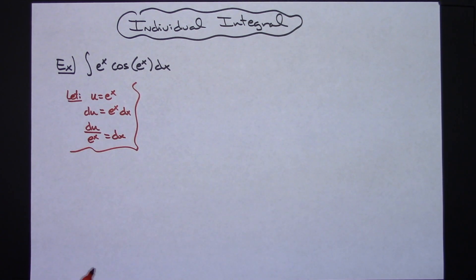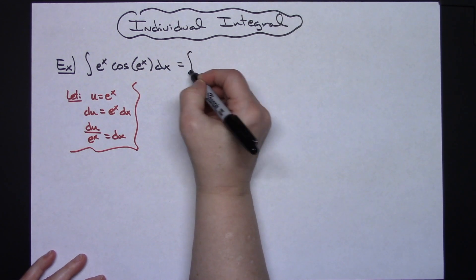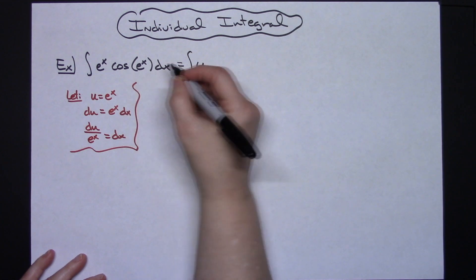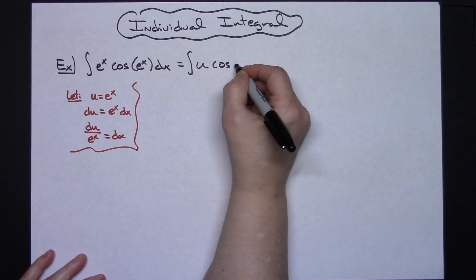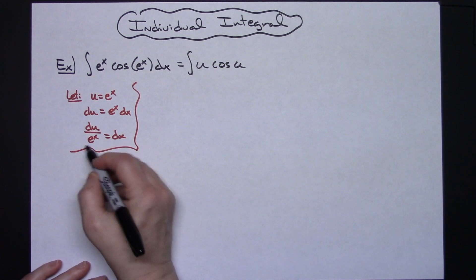Then I'm going to come back up here to my integral and I'm going to start replacing things. So I'll have the integral of e to the x, we said was u. I'm going to have a cosine of u. Now I'm going to replace that dx with du over e to the x.